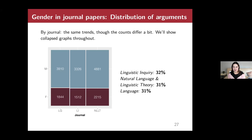Breaking the data down by journal, the counts differ — Natural Language and Linguistic Theory has generally more examples with human gendered arguments than Linguistic Inquiry or Language — but the proportions are strikingly similar: 31–32% female arguments across all three journals. This consistency allows us to collapse data across all three journals for the rest of the analysis.